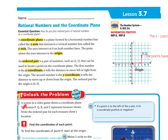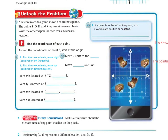Let's unlock the problem. A screen in a video game shows a coordinate plane. The points P, Q, R, and S represent treasure chests. Write the ordered pair for each treasure chest location. If a point is to the left of the y-axis, is its x-coordinate positive or negative? Here's my origin — if it's to the left, it's going to be negative. To the left is negative, to the right is positive. If I go up, it's positive; if I go down, it's negative. So the answer is going to be negative.